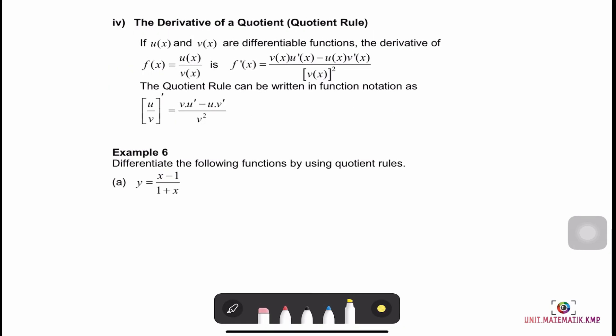Next, the derivative of a quotient, called the Quotient Rule. If u(x) and v(x) are differentiable functions, then the derivative of f(x) = u(x)/v(x) is f'(x) = [v(x)·u'(x) − u(x)·v'(x)] / v(x)². In function notation: (u/v)' = (v·u' − u·v') / v².